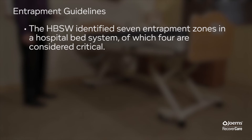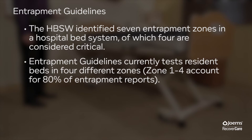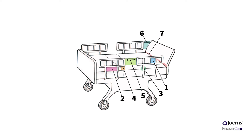The HBSW identified seven entrapment zones in a hospital bed system, of which four are considered critical. Entrapment guidelines currently test residents' beds in four different zones. Zones 1 through 4 account for 80% of entrapment reports. There are a total of seven zones of entrapment within a bed system, and this picture highlights where these seven zones are located.